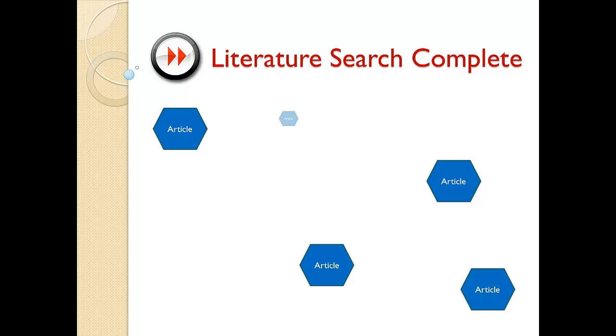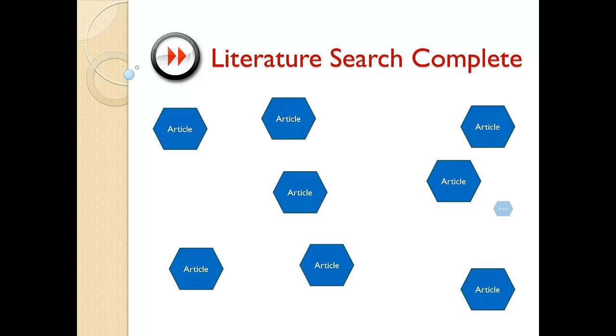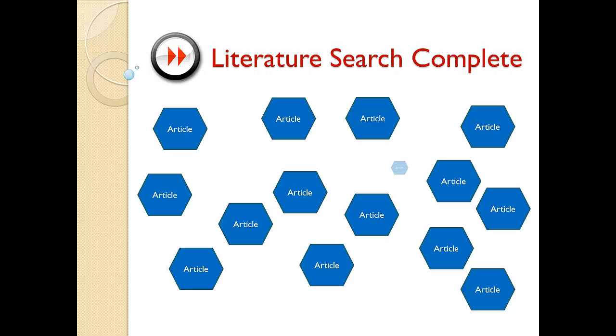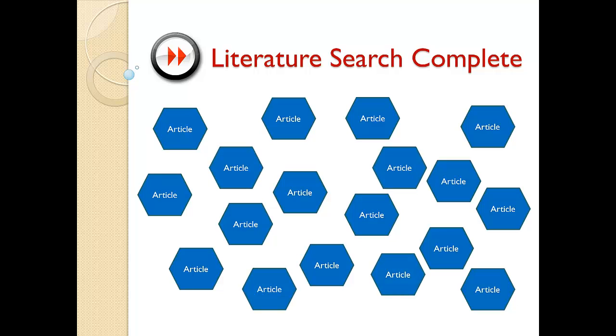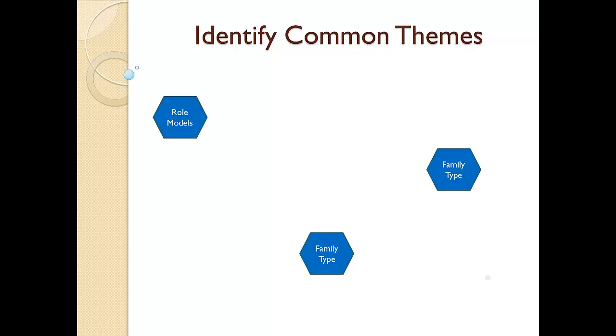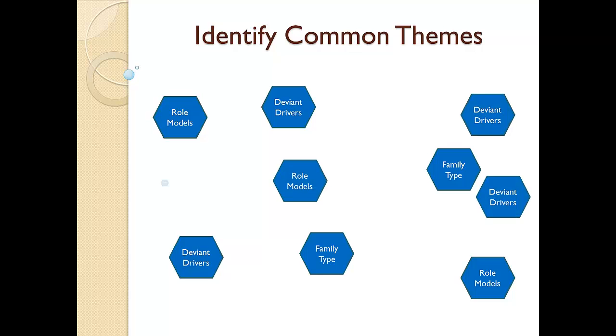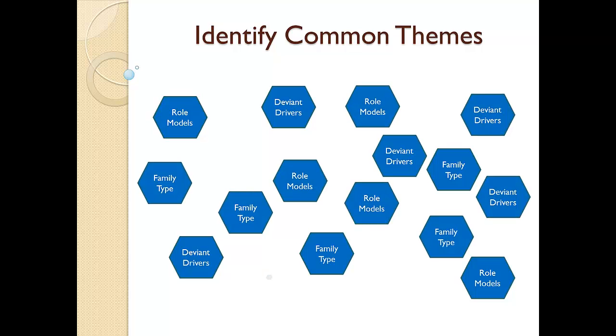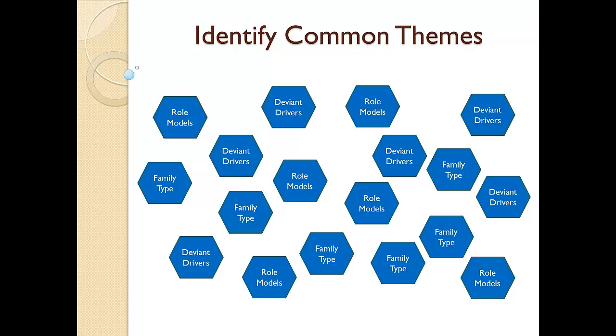I'm going to fast forward now and assume I have completed my search for existing information on our sample research topic. At this point, I should have a lot of articles that need to be included in my literature review. Now I am ready to move to the next step — I'm going to look for common themes in the articles I located. As I begin reading the articles, common themes start to emerge. I noticed that common themes include drivers to commit deviance, the influence of role models, and family structure or type of family.